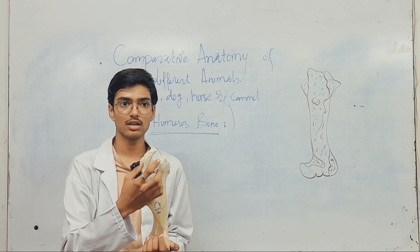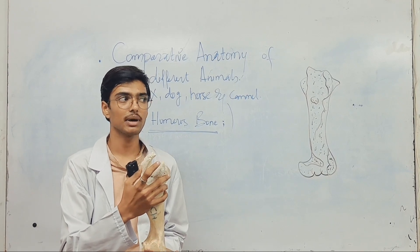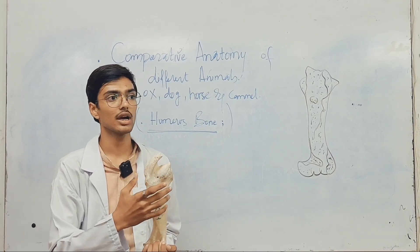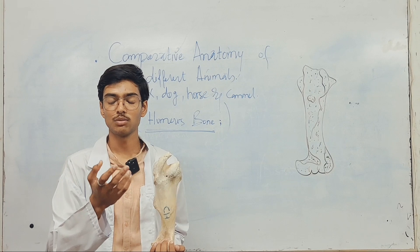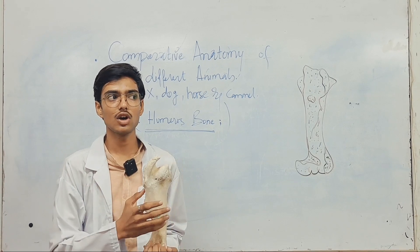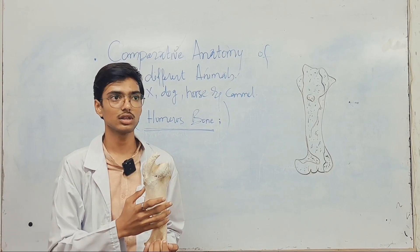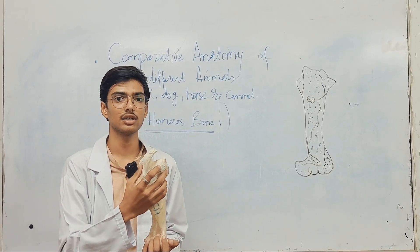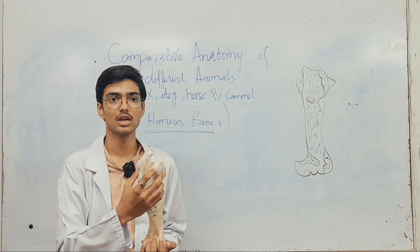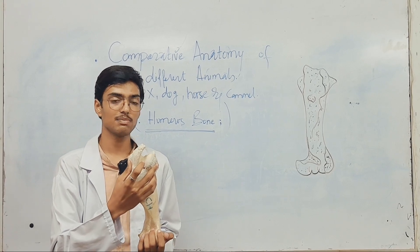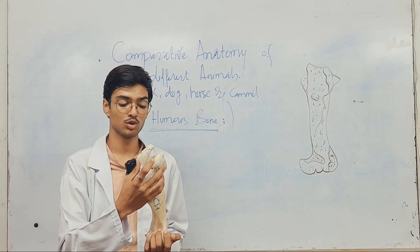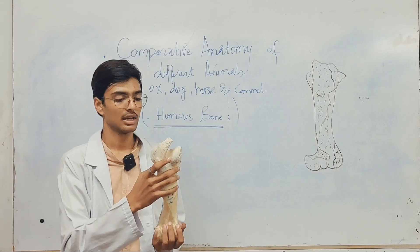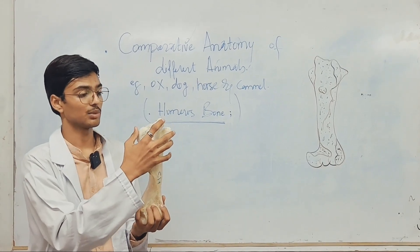It is shallow in ox, but if we look at the humerus of camel or horse, the bicipital groove between the lesser and intermediate tubercles is deep — as deep as the groove sulcus between the intermediate and greater tubercles.